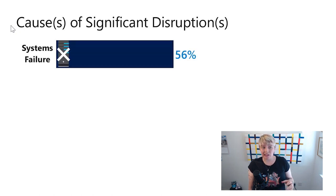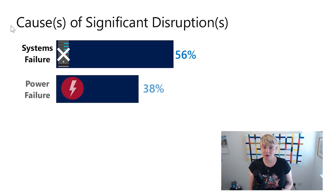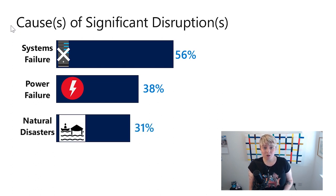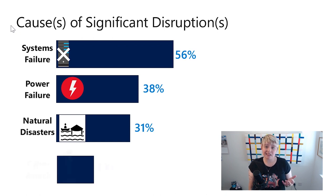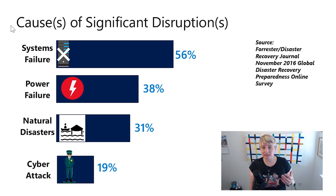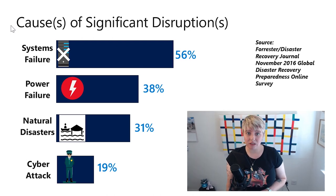The most significant one is a systems failure — something is broken or isn't working the way that it should. The second one is a power failure, whether something has failed or maybe someone has been drilling out in the street and caused that issue. The third one is a natural disaster, where some kind of weather element has impacted your data center and knocked out your IT systems. And the last one is cyber attacks, where someone is trying to maliciously get into your system and has caused an outage.